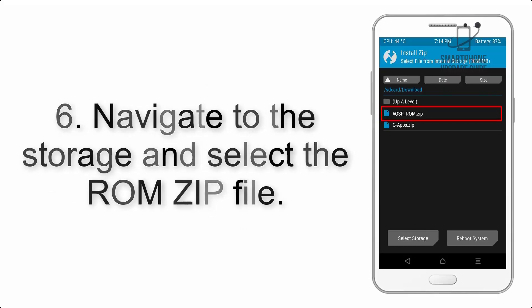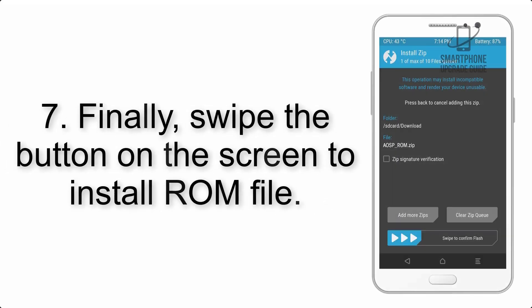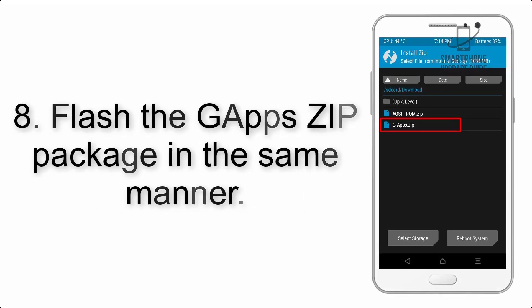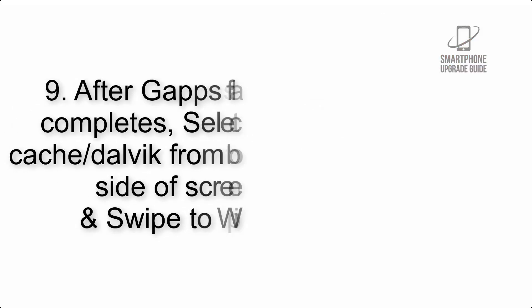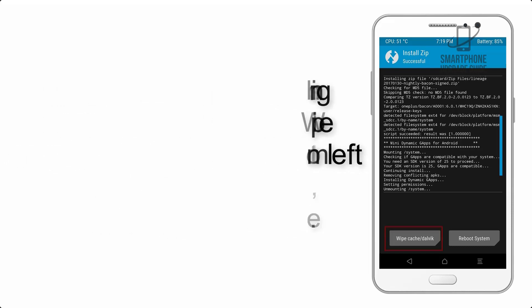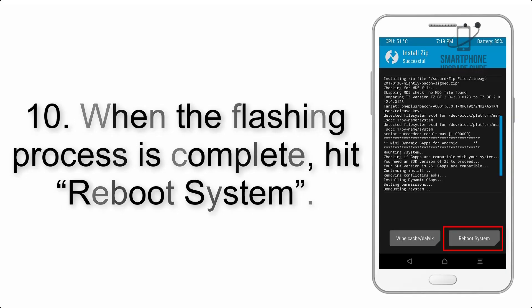Step 5: Go back to the recovery main screen and tap on the Install button. Step 6: Navigate to the storage and select the ROM zip file. Step 7: Swipe the button on the screen to install the ROM file. Step 8: Flash the GApps zip package in the same manner. Step 9: After GApps flashing completes, select Wipe Cache and Dalvik from the bottom left side of the screen and swipe to wipe.